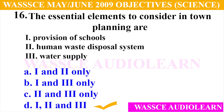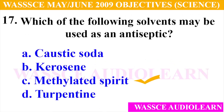Question 16: The essential elements to consider in town planning are — I. Provision of schools, II. Human waste disposal system, III. Water supply. The possible answers are A. I and II only, B. I and III only, C. II and III only, D. I, II, and III. And the answer is D, I, II, and III.